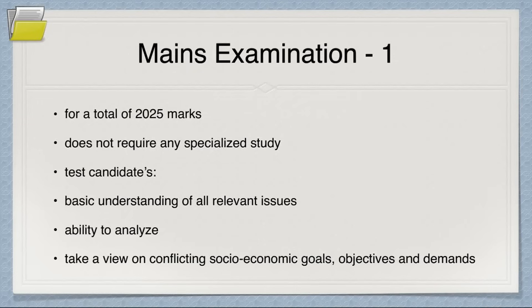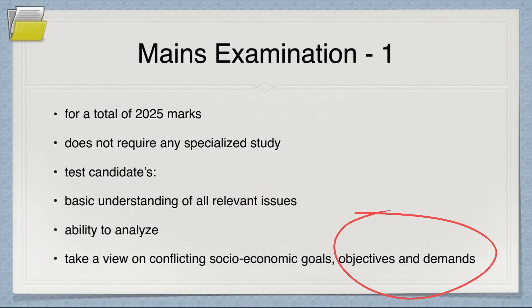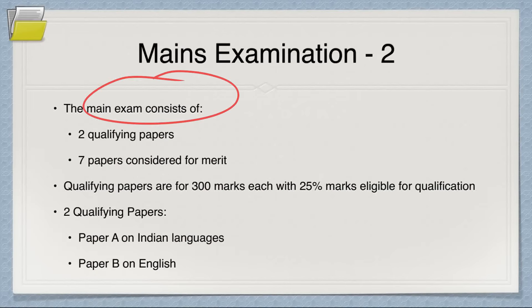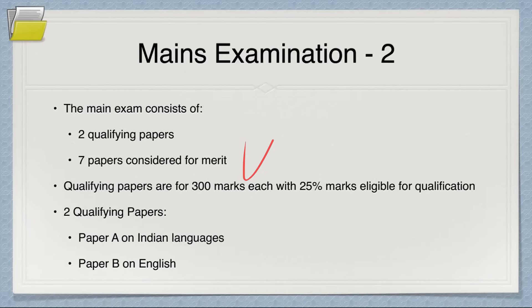What is the pattern of the mains examination? It consists of a written examination and an interview test — basically 2025 marks total. It tests candidates' basic understanding of relevant issues and ability to analyze conflicting socio-economic goals. There is one essay paper, four GS papers, and two optional papers — seven papers in total. Apart from those, there are two qualifying papers on Indian languages: Paper A on any scheduled Indian language and Paper B on English.